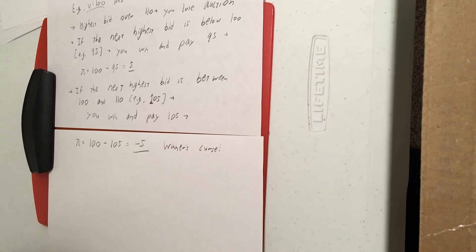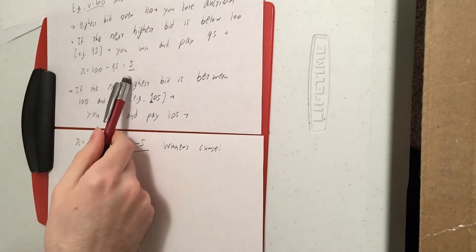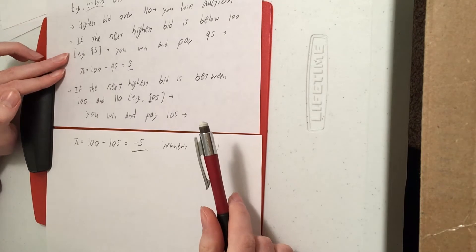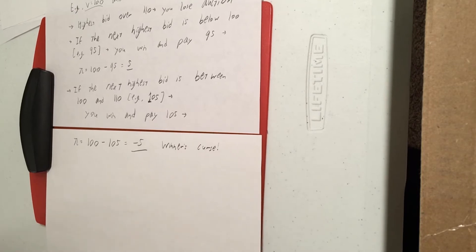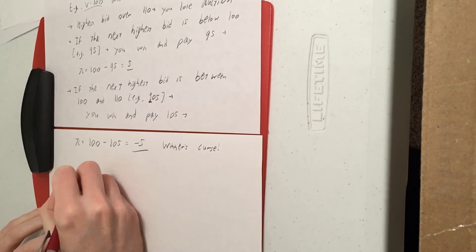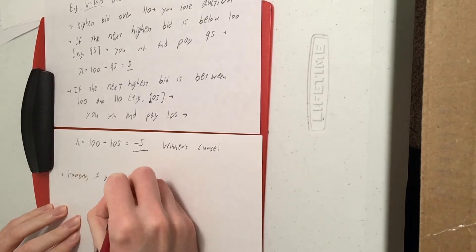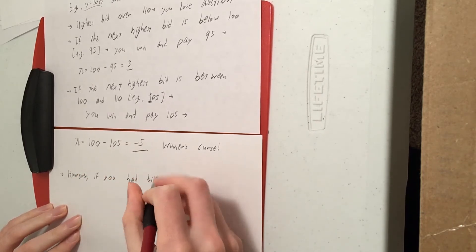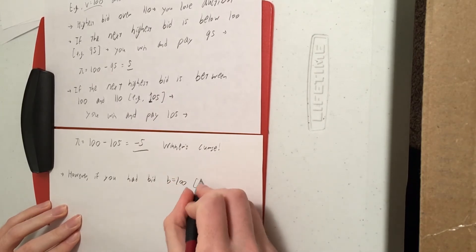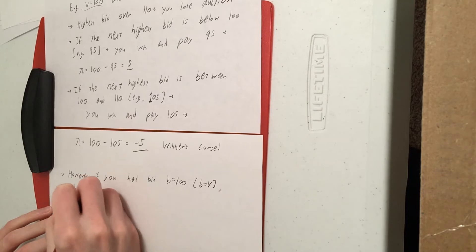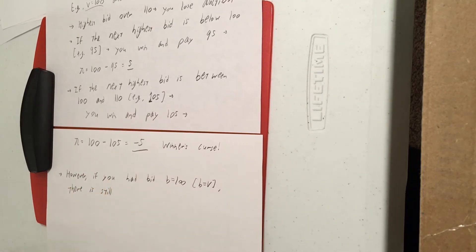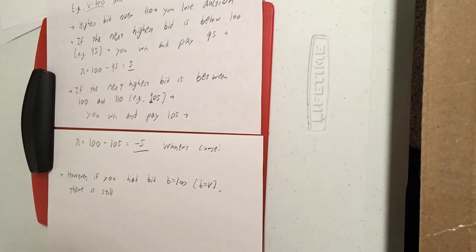So is that an acceptable risk to get the potential benefit of winning a positive payoff? The answer turns out to be no, because you had an alternative strategy that would have been better. If you bid b equal to your valuation — a bid of 100 in this example — then you can avoid that winner's curse altogether.